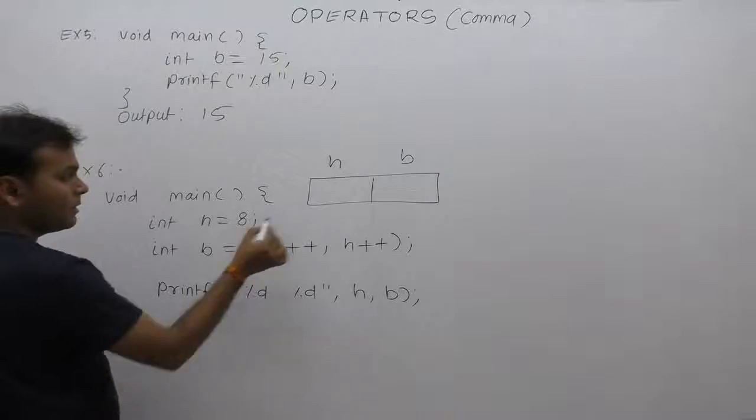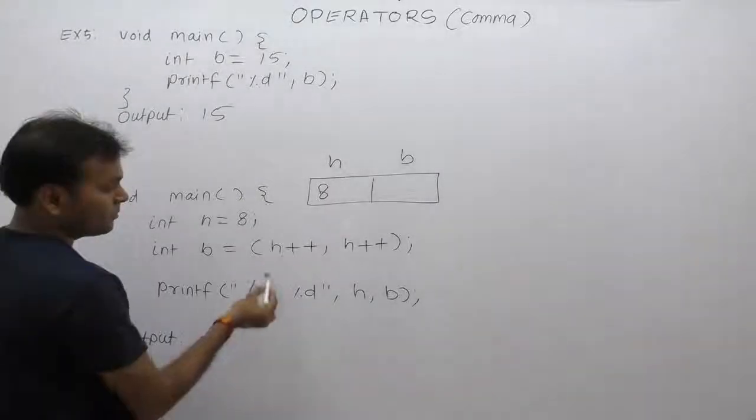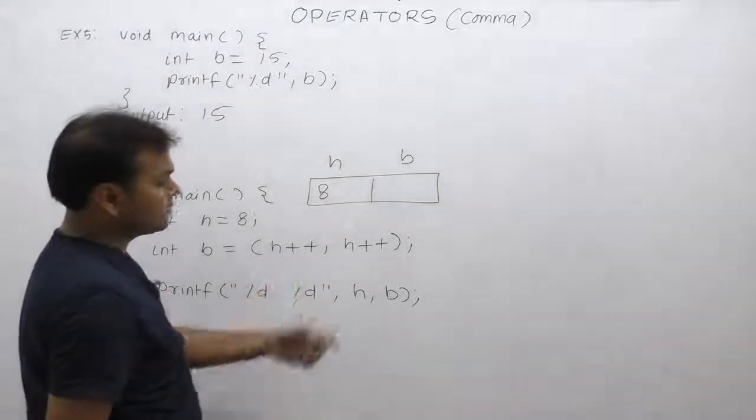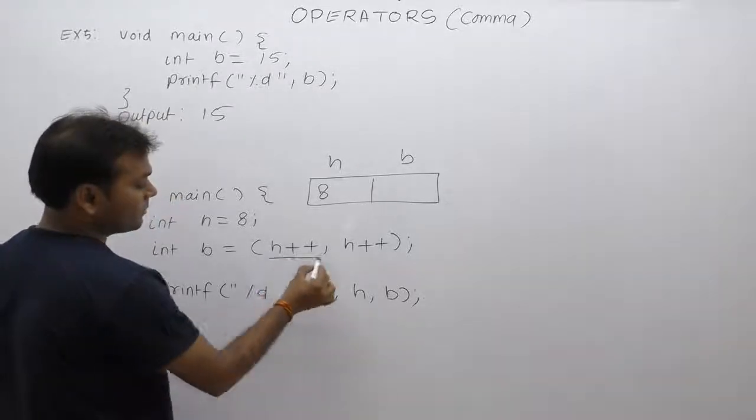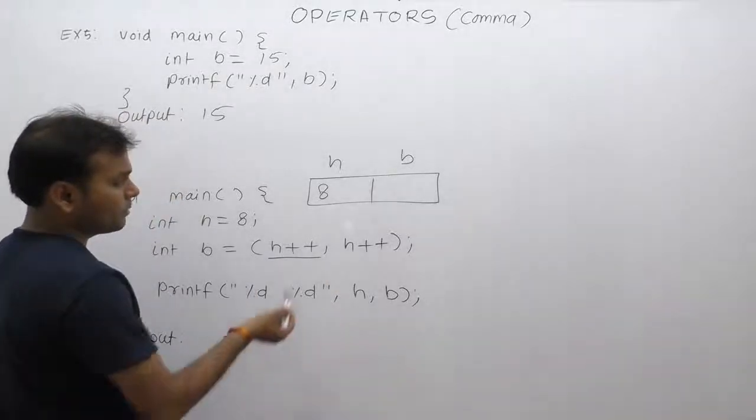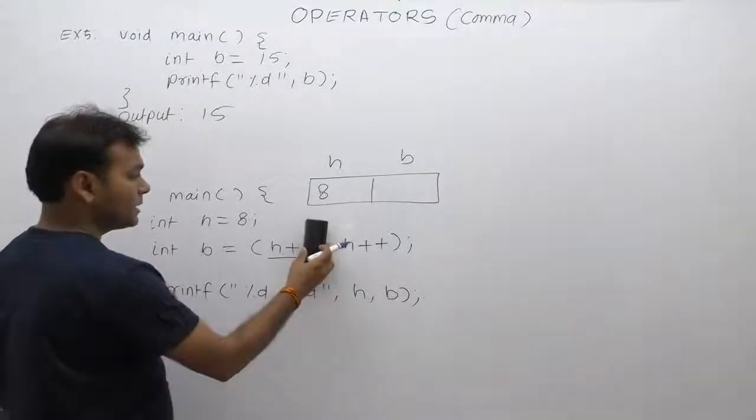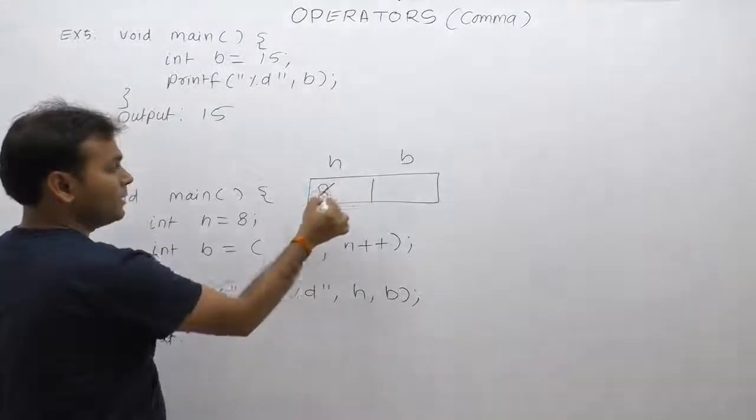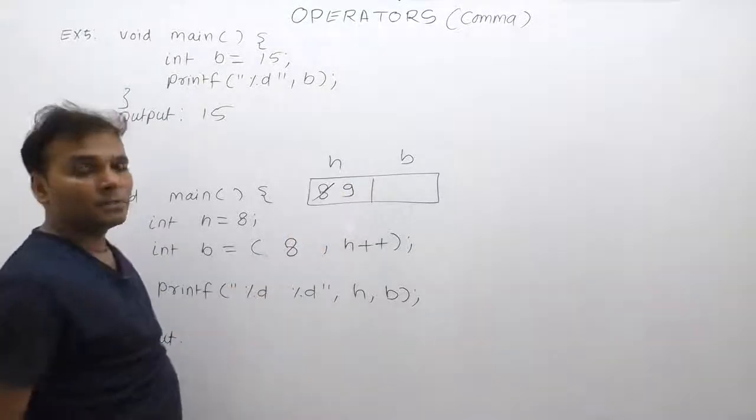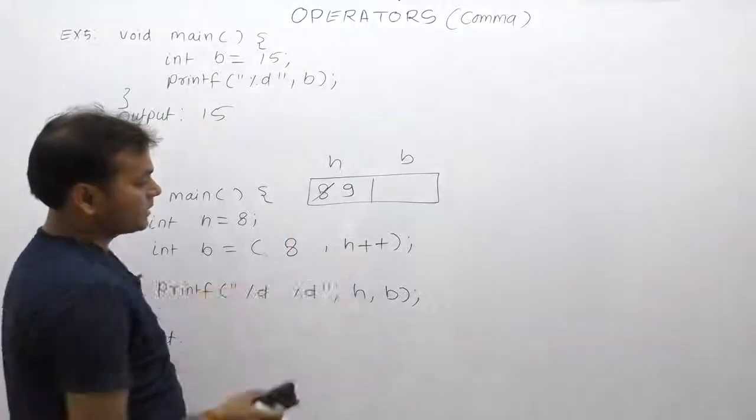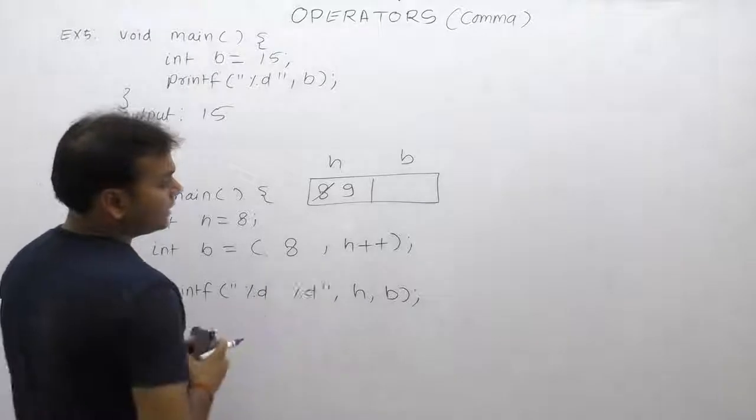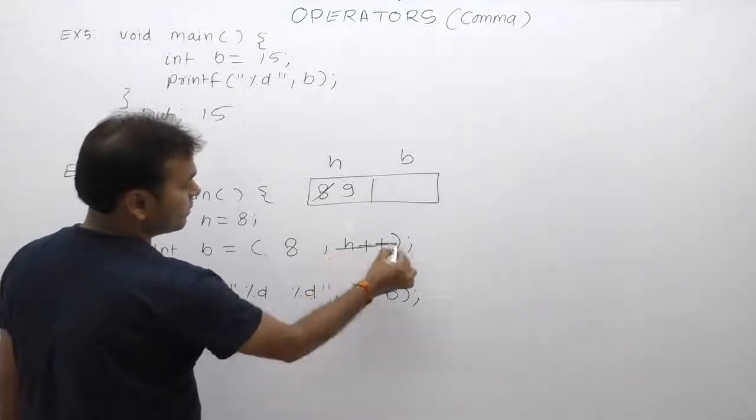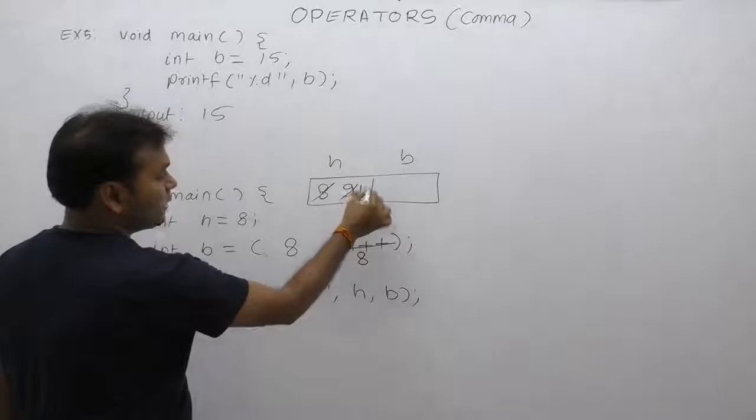Next one, the initial value of h is eight. Solve this expression. Again, comma-separated expression given. Expression from left to right: first one is post-increment. Post means parallel replacement. Replace current value of h, which is eight, after that increment. h becomes nine. Next one, second case: post again, parallel replacement, eight, then increment. Now h becomes ten.